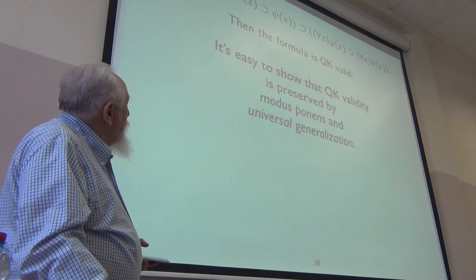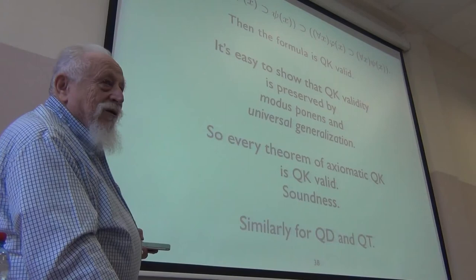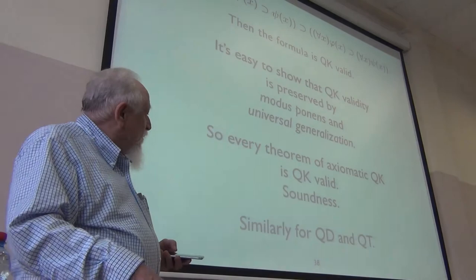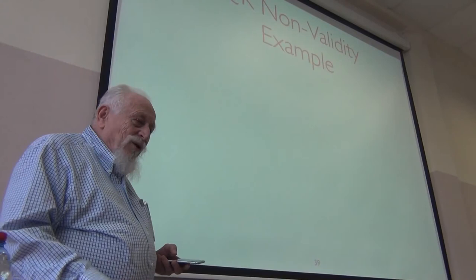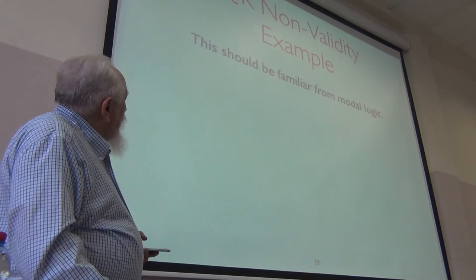You can easily verify that all of the QK axioms are valid and that the rules preserve validity, giving a soundness result: anything provable is valid. You can do the same for QD and QT — seriality and reflexivity give you exactly what you need. We don't need completeness yet; soundness is enough. If I can show you a QK model where something fails, then it can't be provable in QK.